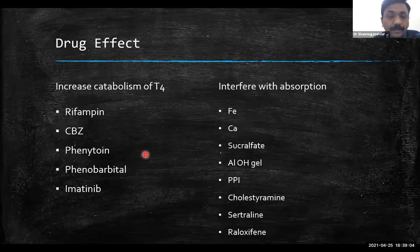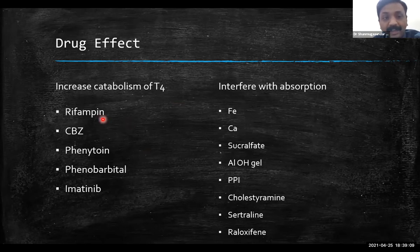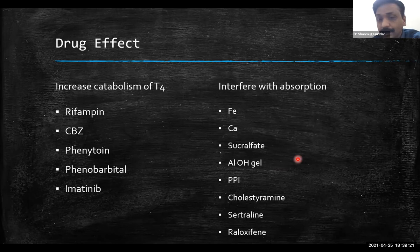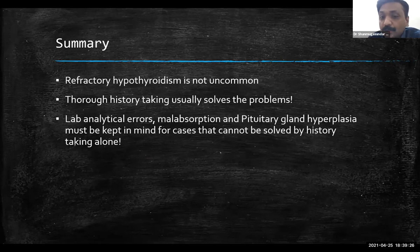Drugs that increase catabolism of T4 include rifampicin, carbamazepine, and phenytoin — these require increased dosage. Drugs interfering with absorption include iron, calcium, and anti-gastric drugs like sucralfate and PPIs. All these factors should be kept in mind while treating difficult hypothyroid cases.